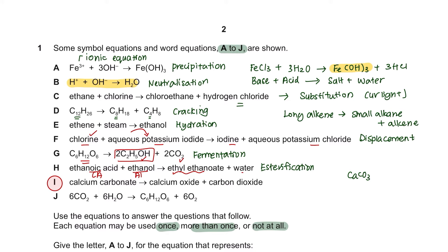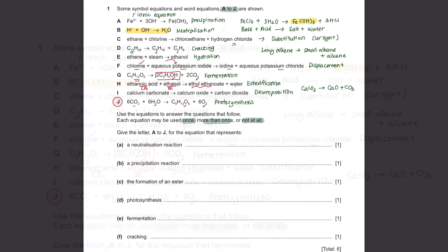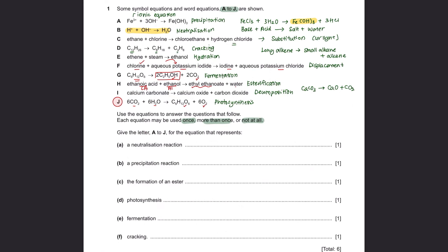Equation I shows calcium carbonate becoming calcium oxide and carbon dioxide — encountered in the blast furnace during extraction of hematite, and this is known as decomposition. Equation J shows carbon dioxide and water converting into glucose and oxygen — this is photosynthesis. For the next step, simply fill in the blanks with the letter A to J that represents each reaction. Make sure you're only using the letters A to J and not writing the full equation in the answer space.